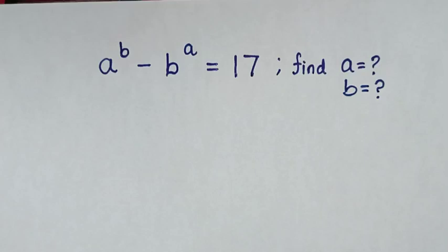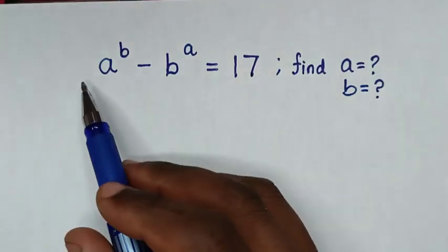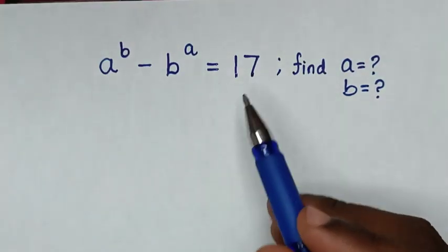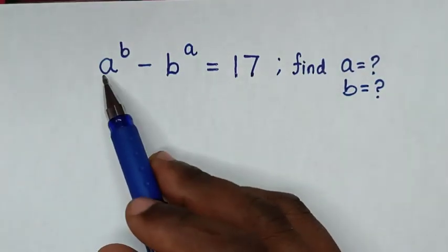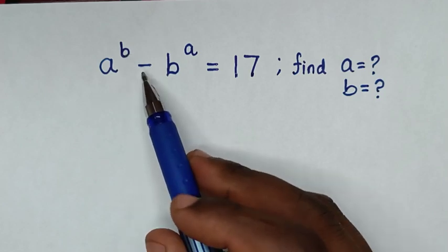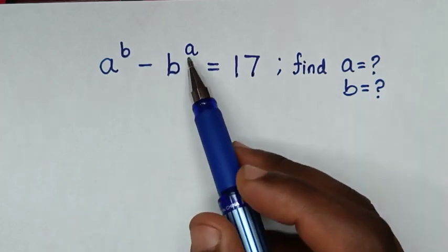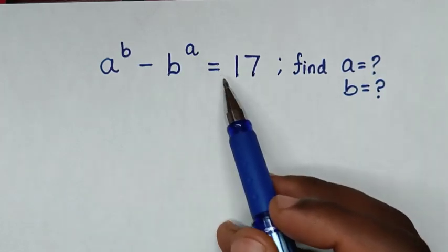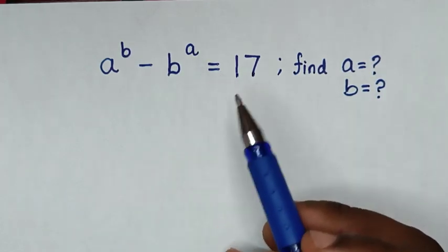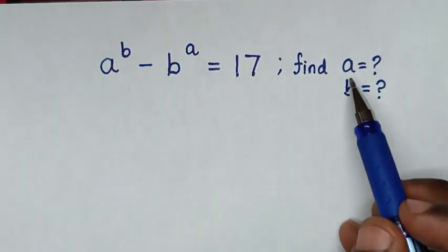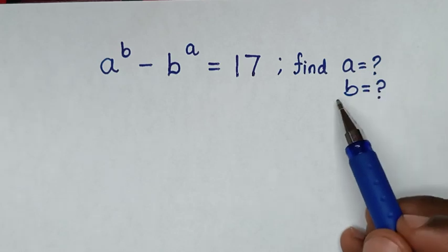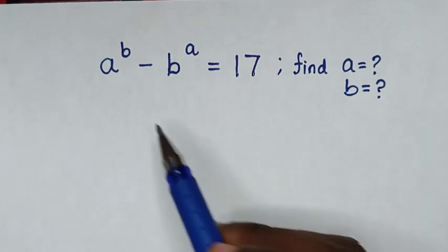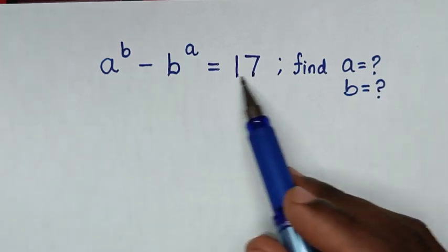Hello, you are welcome to solve this math problem: a power of b minus b power of a is equal to 17. Find the value of a and b from this equation.